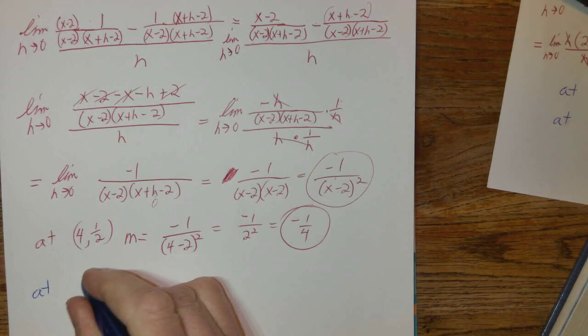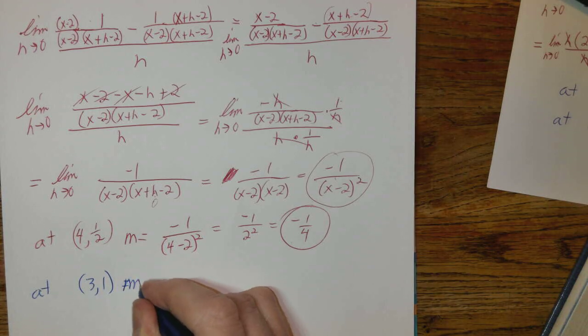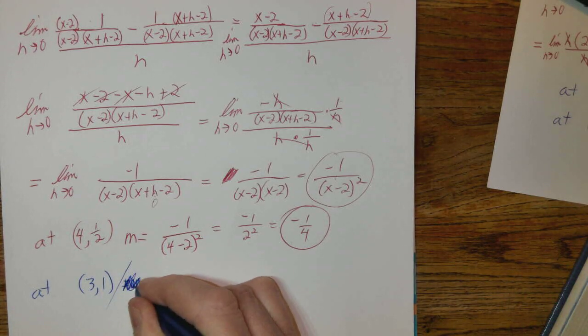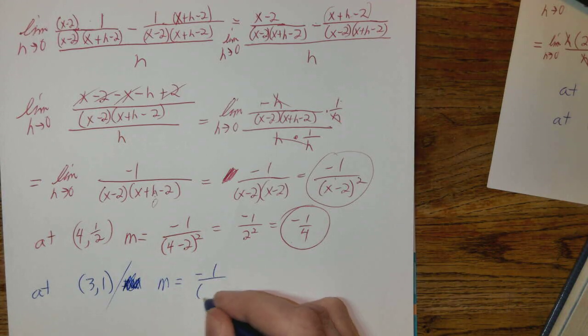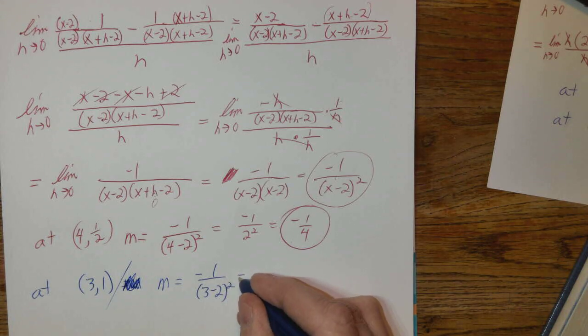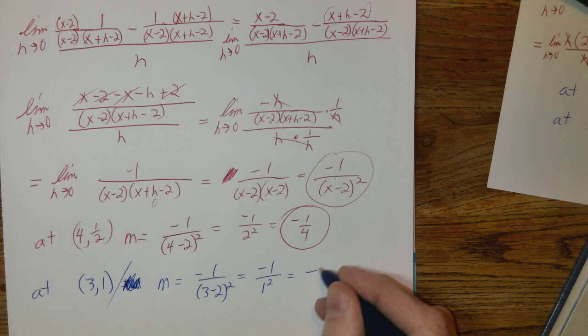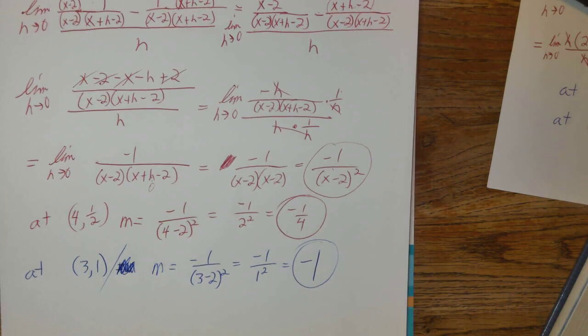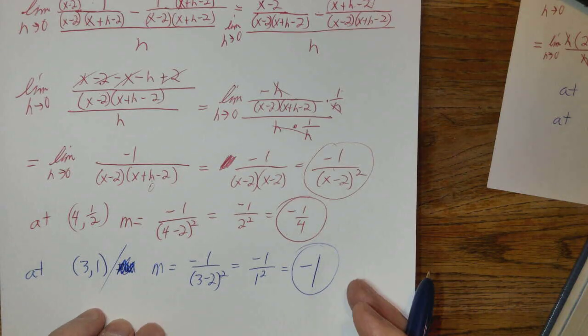And at (3, 1), m equals -1/(3-2)². So -1/1², which is -1 divided by 1 or -1. The slope at that specific point is just -1.